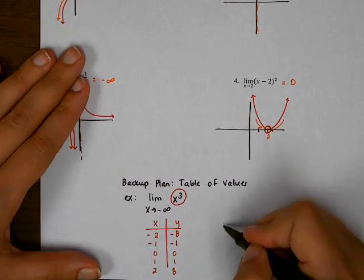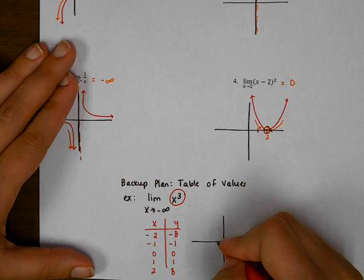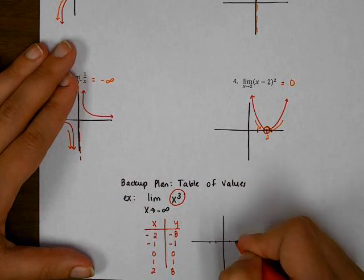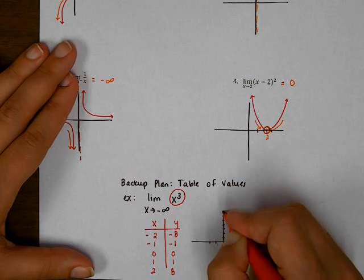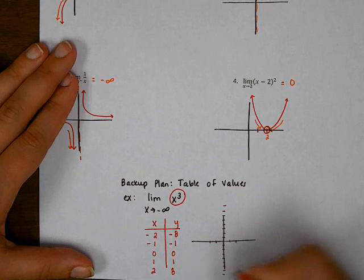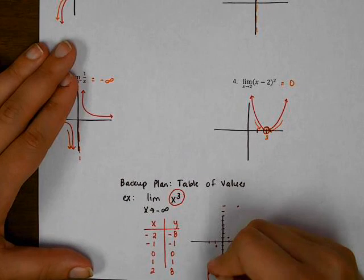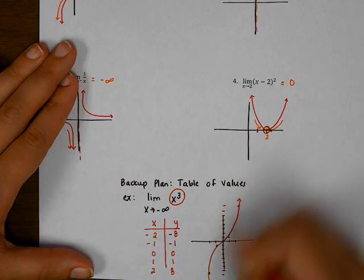Then I could use those values to sketch myself a picture. Negative two, negative eight; negative one, negative one; zero, one, one; two, eight. And it would help me remember the shape of that graph.